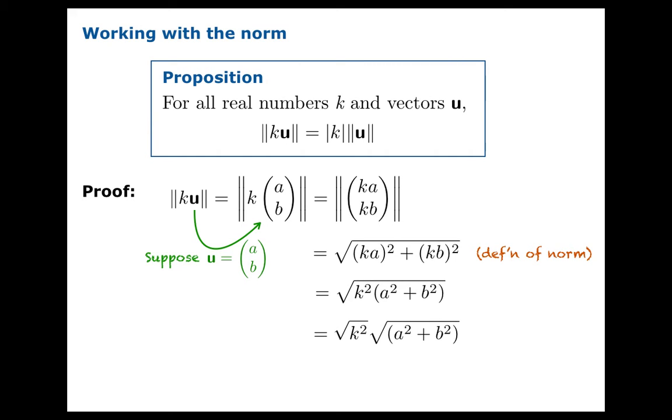Apply some algebra. Square root of a product is the product of the square roots. And at this point, a fun fact, the square root of k squared is actually the absolute value of k. And the expression on the right is precisely the norm of the original vector u. Lo and behold, there's the relationship we were looking for. Absolute value of k times the norm of u is equal to the original expression.